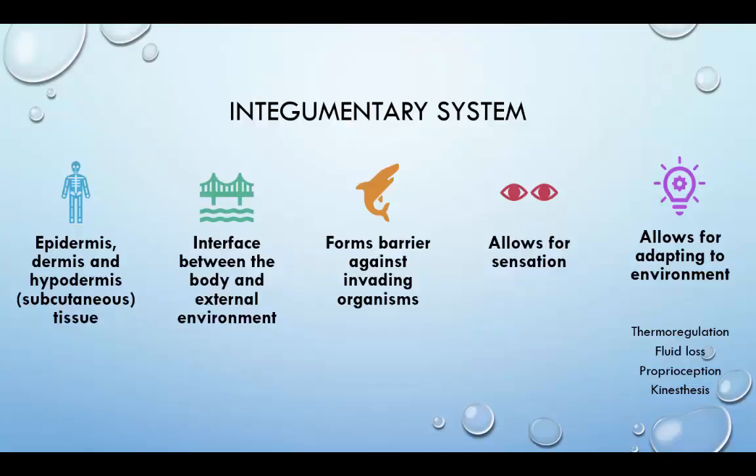The epidermis, dermis, and hypodermis make up the integumentary system. It is the interface between the body and the external environment. The integumentary system is a dynamic system that forms a barrier against invading organisms and outside influences. It allows people to sense and adapt to the environment in terms of thermoregulation, fluid loss, proprioception, and kinesthesis.